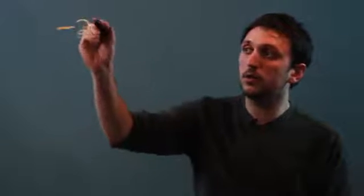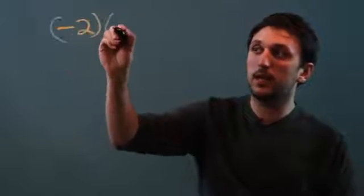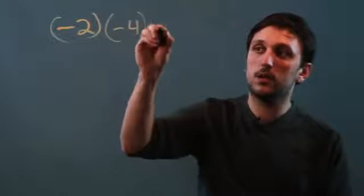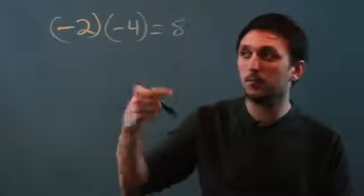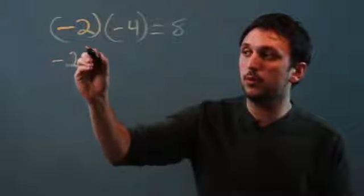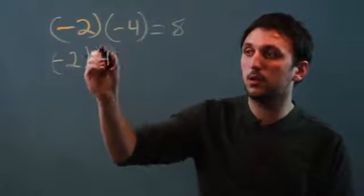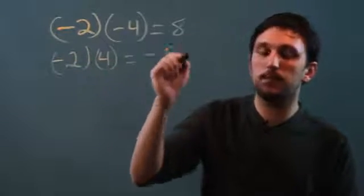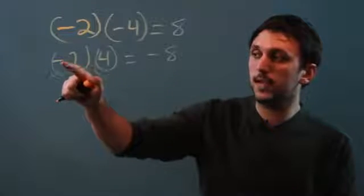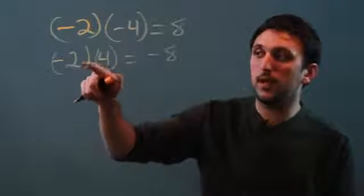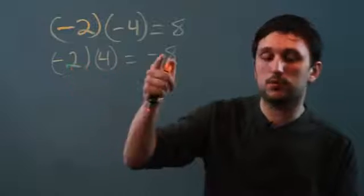So I'll give an example of that first. Negative two times negative four equals positive eight, whereas negative two times four equals negative eight. Well, this is a negative times a positive and we're saying okay, well it's going to stay negative.